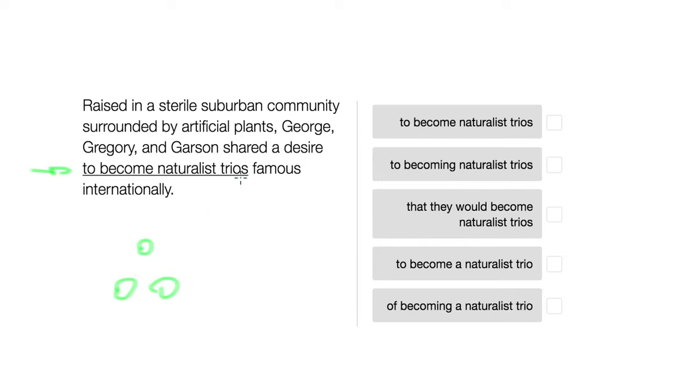Now, the problem here is that trios is in the plural, which would imply that you're going to have two or more groups of three, but you're only given three names: George, Gregory, and Garson. So you can only have a single trio. So, no S here.